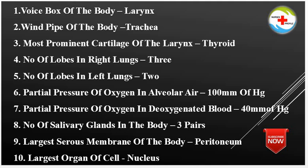Partial Pressure of Oxygen in Alveolar Air: 100 mmHg. Partial Pressure of Oxygen in Deoxygenated Blood: 40 mmHg. Number of Salivary Glands in the Body: 3 pairs. Largest Serous Membrane of the Body: Peritoneum.